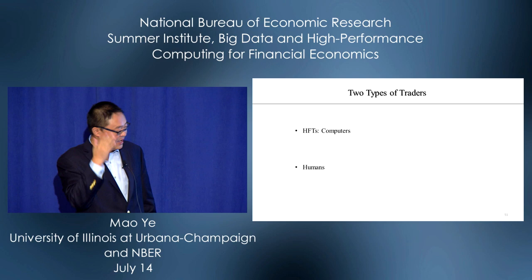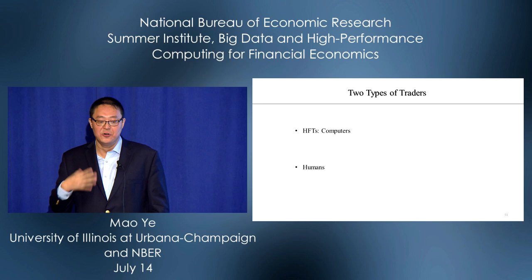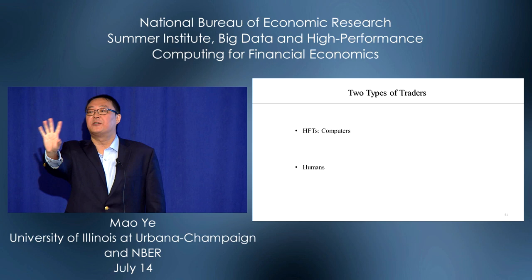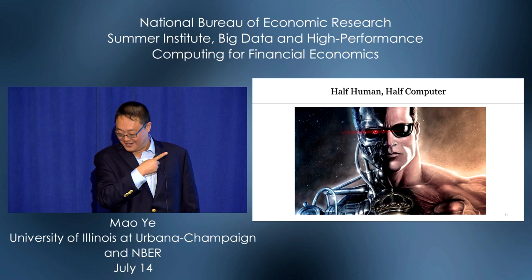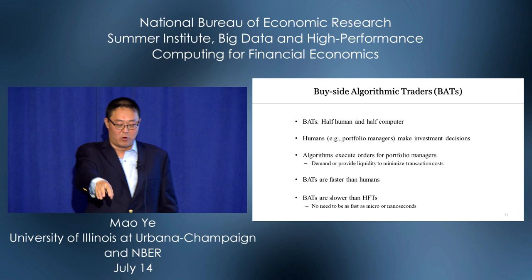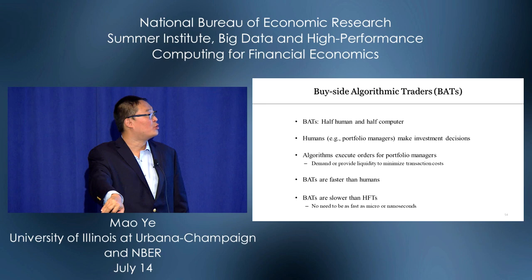The model is complex, but here's the summary. Many researchers think in black and white: either you're a computer or you're human. But there is a third type — half human, half computer. These are called buy-side algorithmic traders. Why half machine, half human? There are lots of portfolio managers making investment decisions — some use machine learning, but many funds still use humans. The investment decision might be to buy one million shares of Google, but the market is so complex they need computer algorithms to execute orders for the portfolio manager.